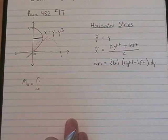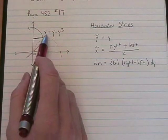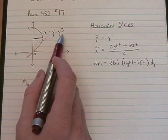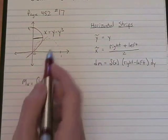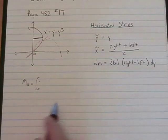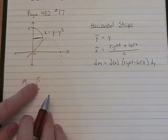You set 0 equal to y minus y cubed, and you solve. And so, the two places that that happens is at 0 and 1. That's how I got those spots.